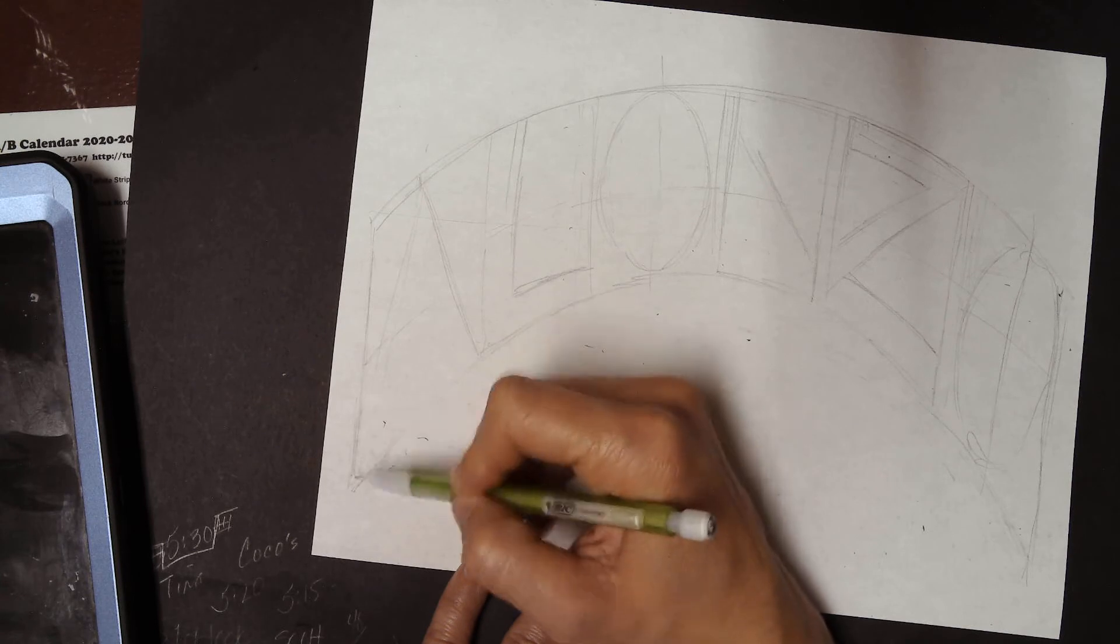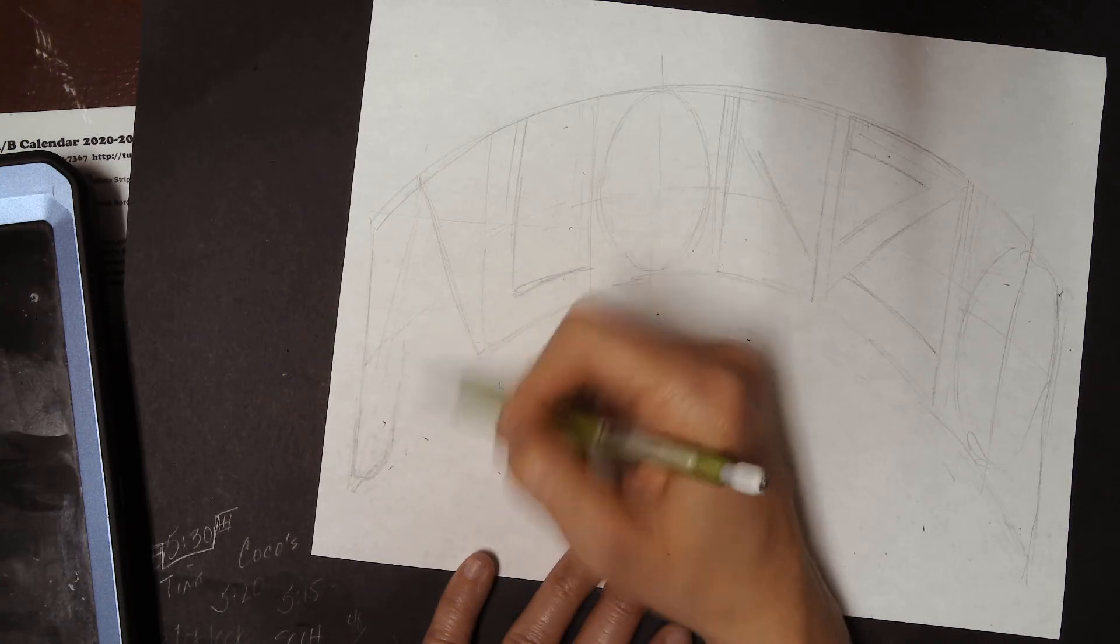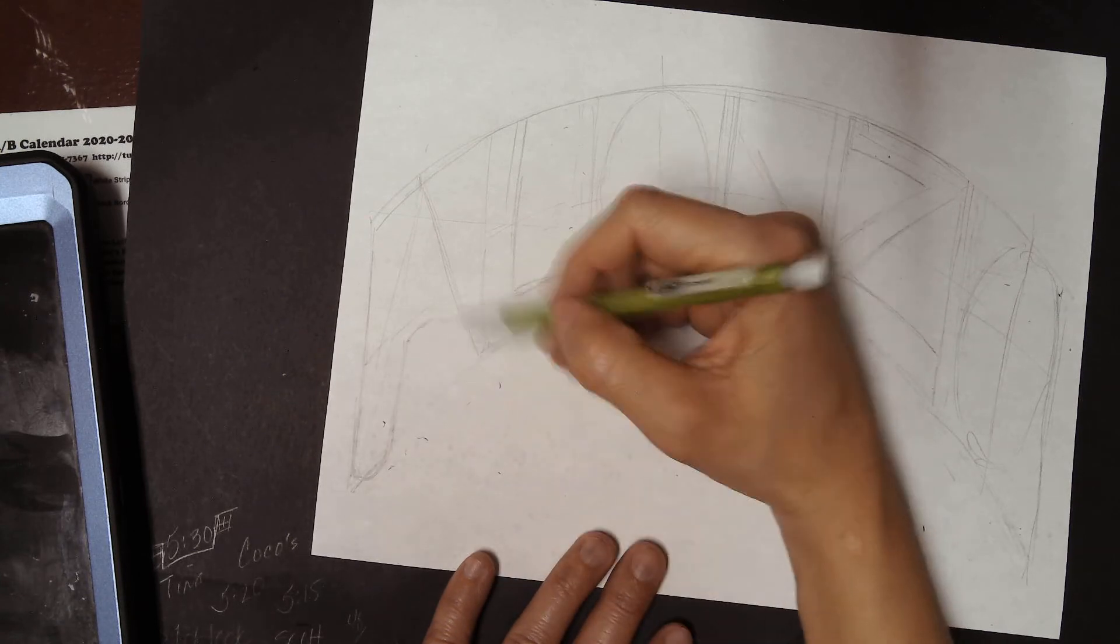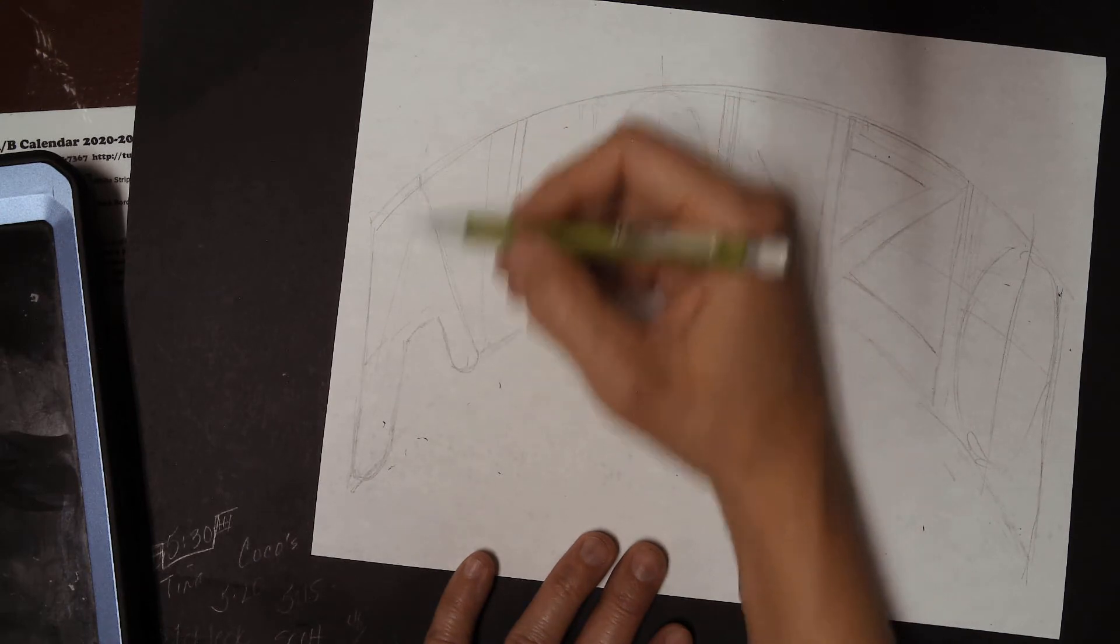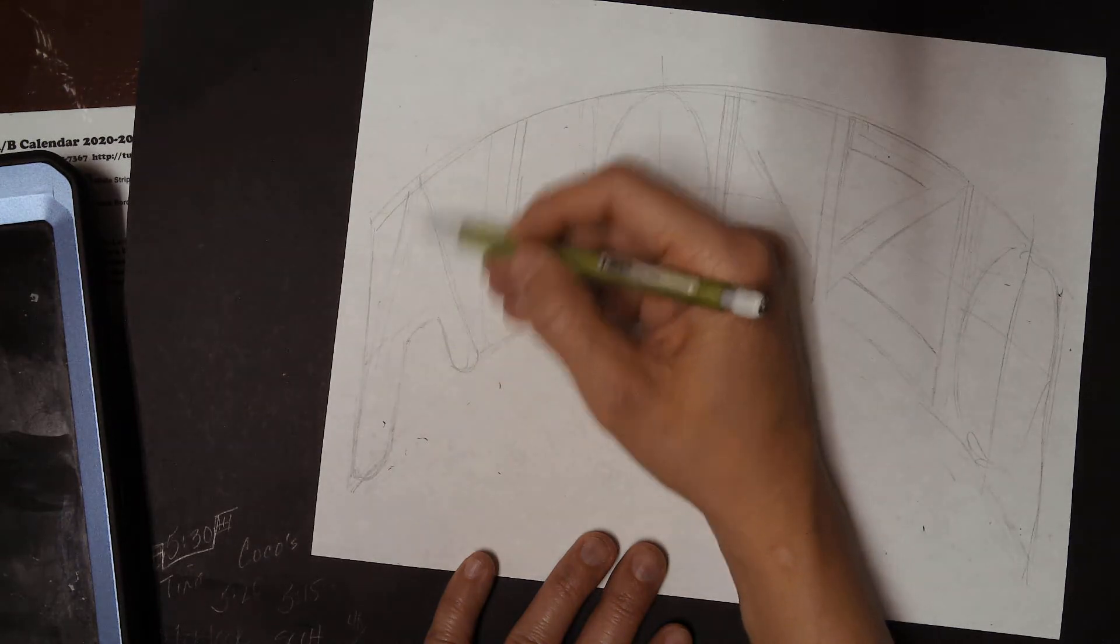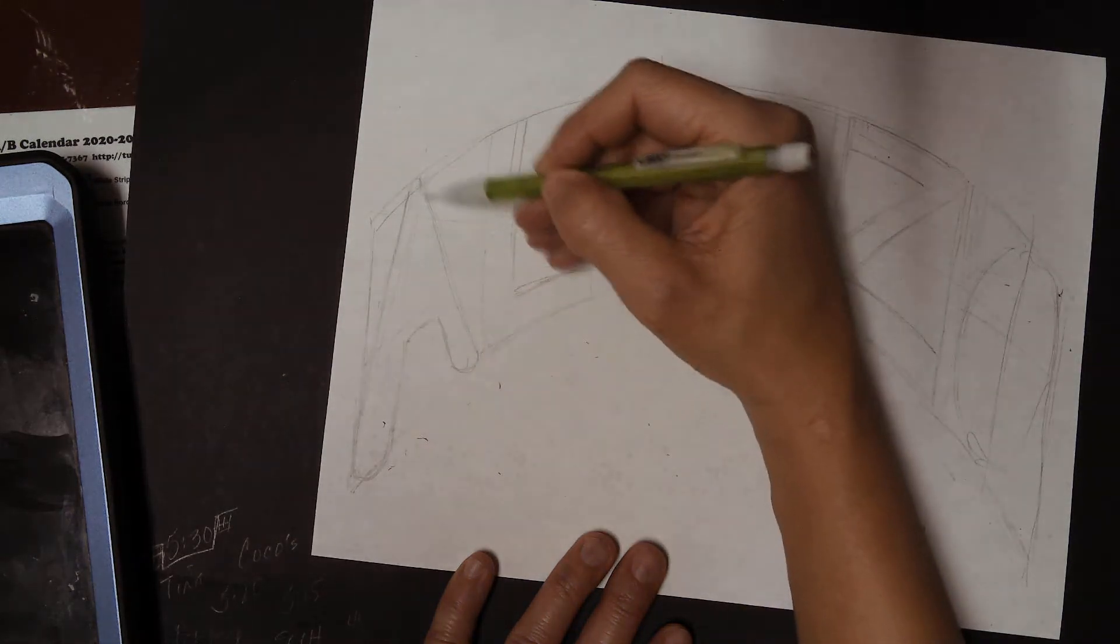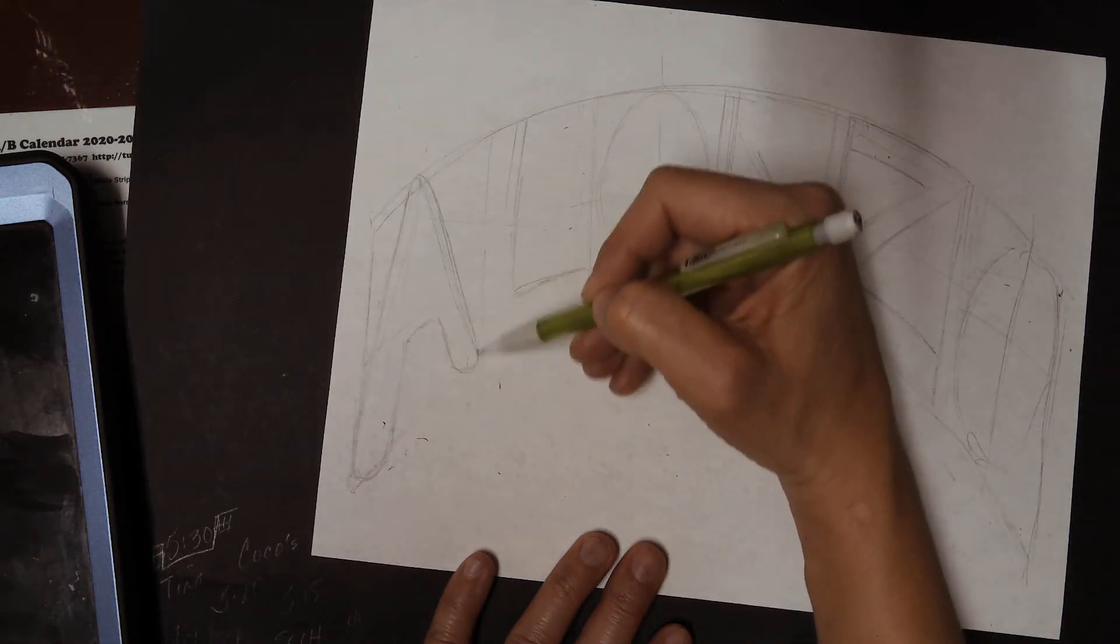So we're going to do them rounded around these little frames that we made. So we're just, all we're going to do is we're going to round the little ends. Now you can go right around the center of these, or you can just get near it. That was just to help us figure out our spacing. Okay.